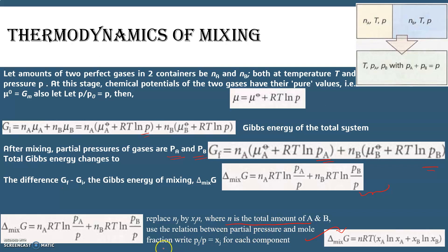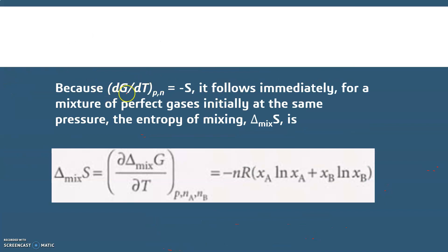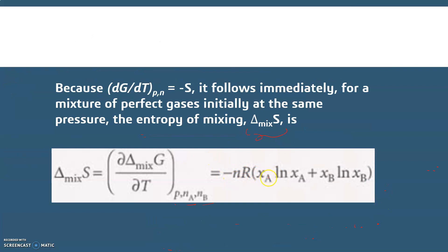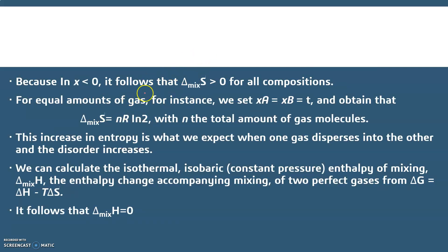The details of this can be found in the notes attached with this class. Since (∂G/∂T) at constant pressure equals −S, it immediately follows that Δ_mix S = −(∂Δ_mix G/∂T) at constant pressure and composition, which gives Δ_mix S = −nR(xₐ ln xₐ + x_b ln x_b). For all compositions, Δ_mix S > 0.